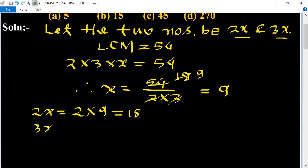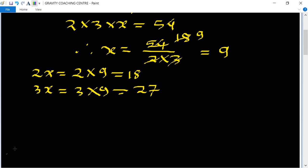3x equals 3 into 9 equals 27. So the sum of the two numbers, therefore the required sum equals: